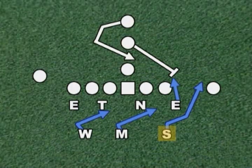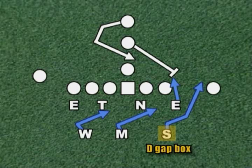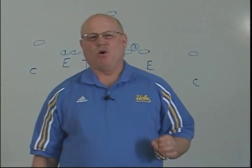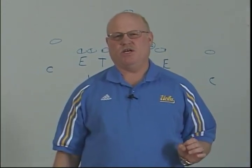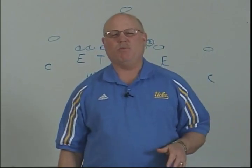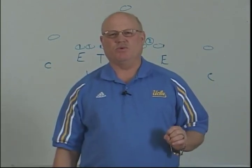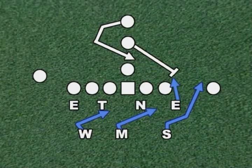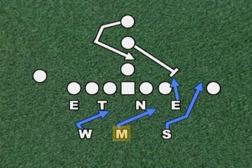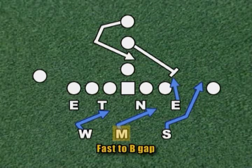The Sam backer becomes the D gap player in this particular play, using a box technique and turning the ball back to the middle backer. This defense demands both the Mike and the Will backer to work in conjunction with each other. They're both keying the tandem of the backs, but the tailback's track is really the key. Both backers step with their left foot and read the track of the tailback. As the Mike backer reads that track and feels the back bending into a cutback following his fullback, he rocks back and goes fast to the B gap — just like in a flood play — becoming our B gap player.